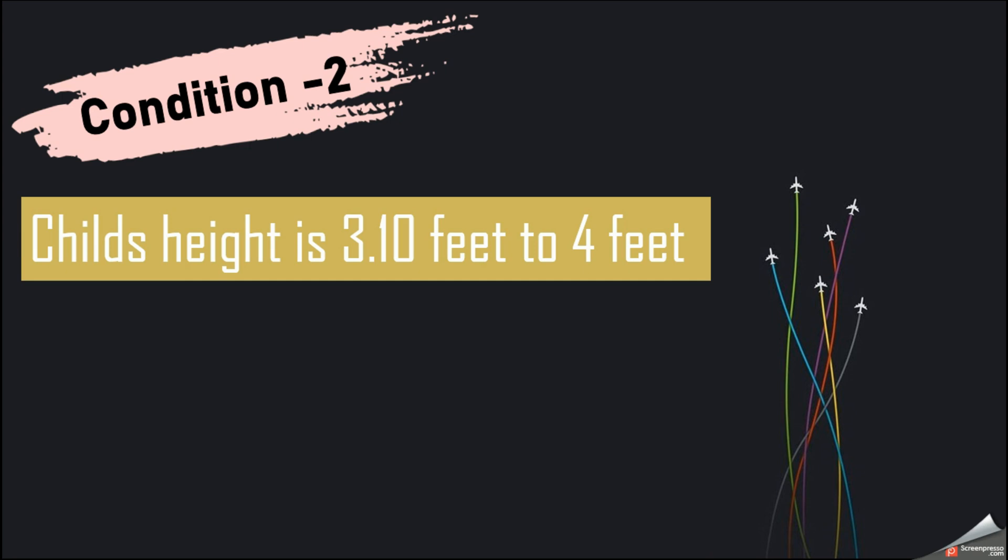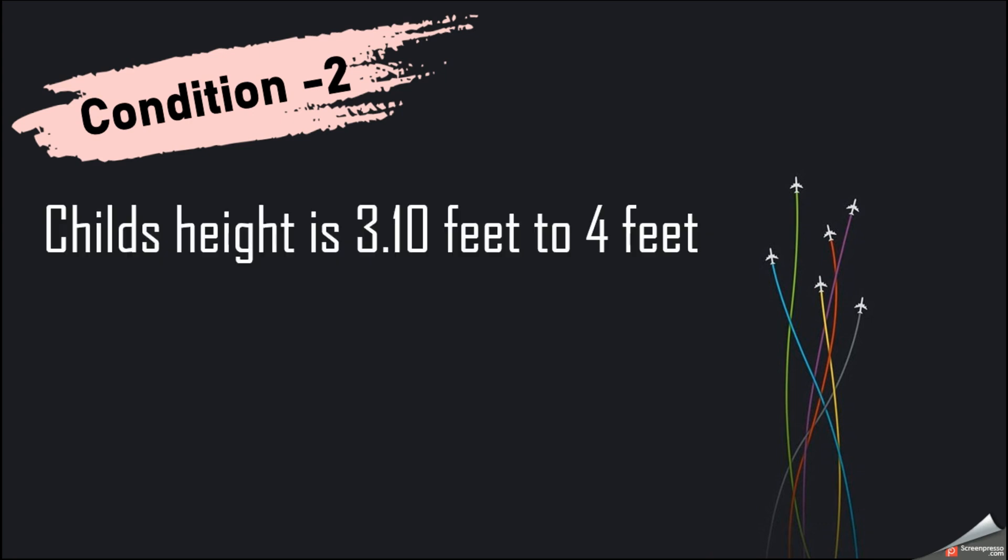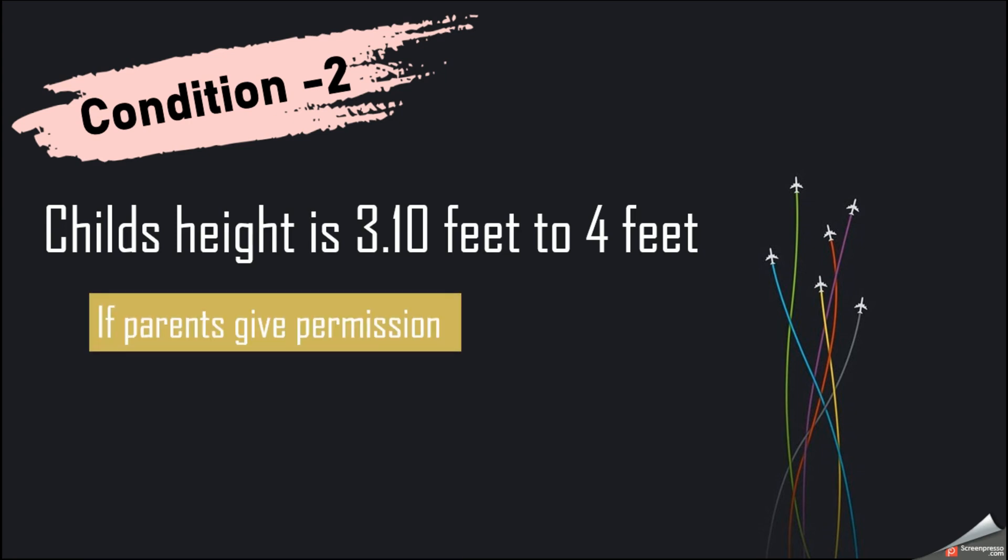Okay, now let's go to our next condition. Here this one will be the condition, and you can see there is another condition: if the parents give the permission, this will become another condition here. So here we have two conditions and these are the outputs.